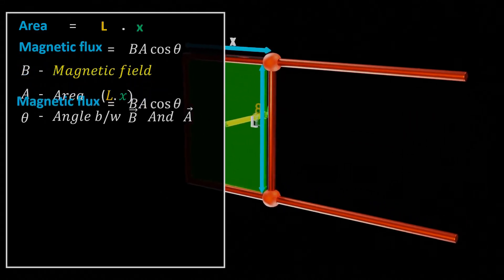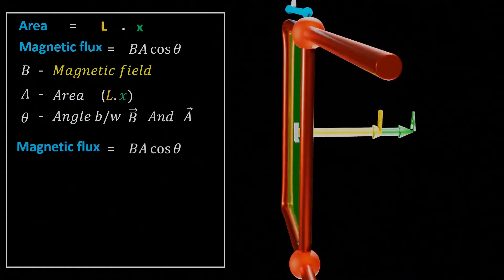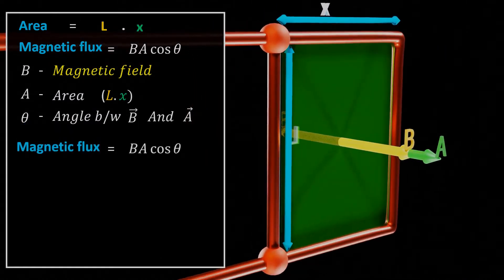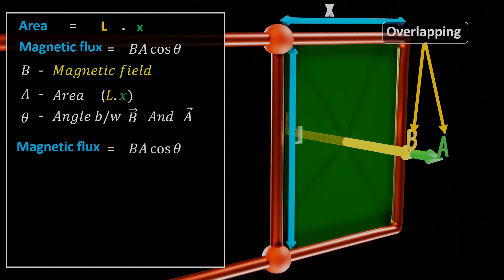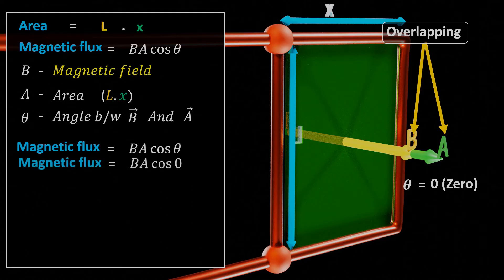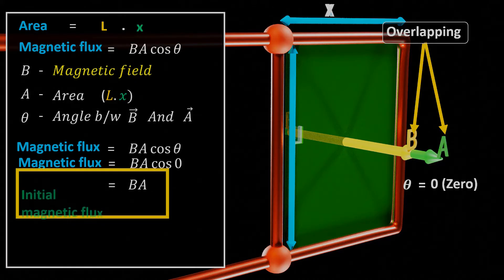But what is the value of theta? Let's try to find value of theta. As we can see in this case, area vector and magnetic field vector is overlapping each other. Due to which value of theta will be 0 and cos 0 is equal to 1. Therefore, we will get magnetic flux as B into A and call it initial magnetic flux.